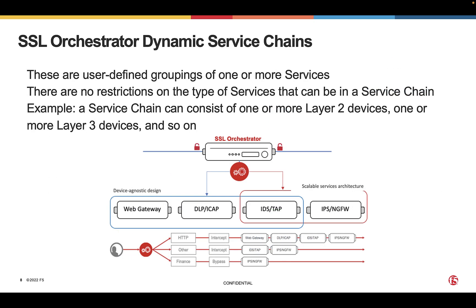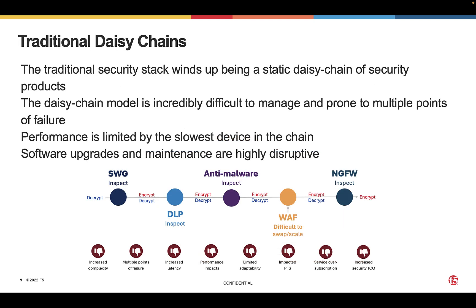Service chains are user-defined groupings of one or more services. SSL Orchestrator is very flexible and supports multiple types of services within a service chain. This is in contrast to the typical daisy chain deployment model, which is difficult to manage, has multiple single points of failure, has performance limitations, and is disruptive to change.